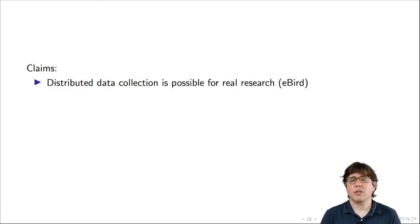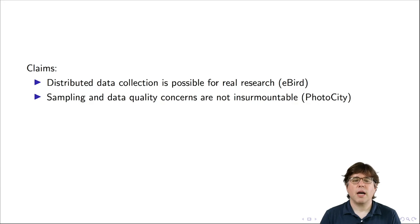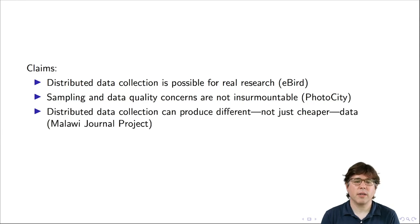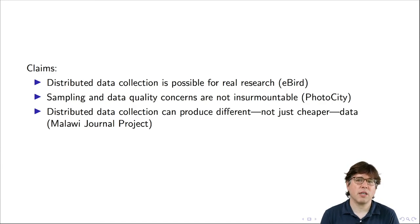That's three examples of distributed data collection projects illustrating three claims. Distributed data collection is possible for real research — as shown by eBird. Sampling and data quality concerns are not insurmountable — Photo City uses a point system to encourage participants to collect different types of data, and using cameras mitigates data quality concerns. Distributed data collection can produce different and not just cheaper data — sometimes people can access different locations than you as a researcher can access, as illustrated by the Malawi Journal Project.